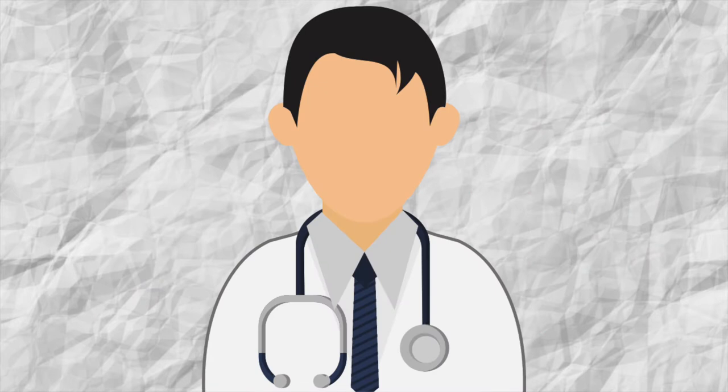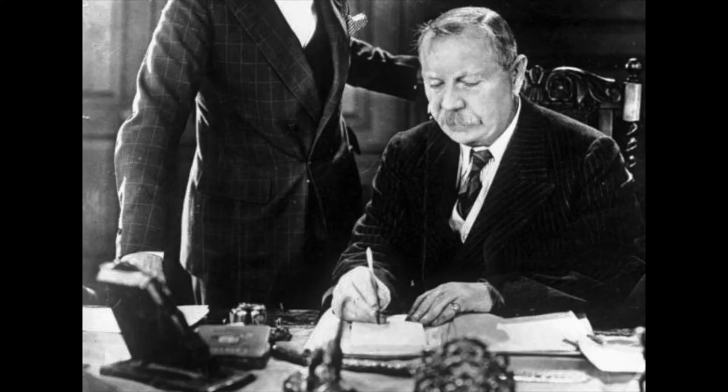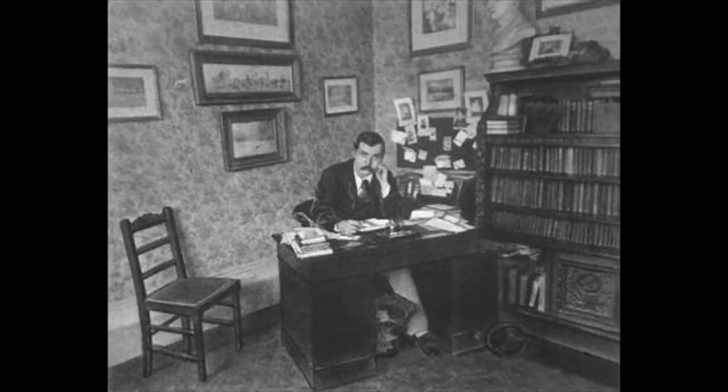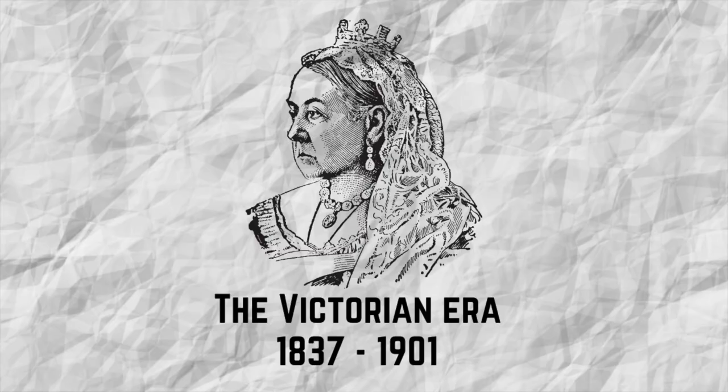While studying, Doyle began writing short stories. In 1882 Doyle set up a medical practice in South Sea near Portsmouth. However the practice was not successful, so while waiting for patients Doyle wrote fiction.